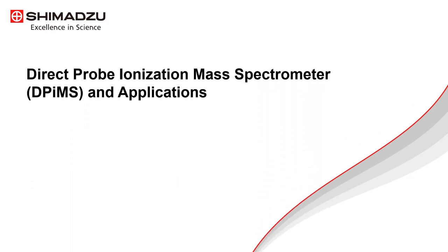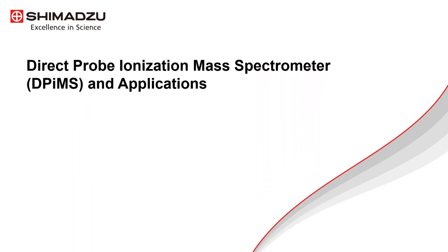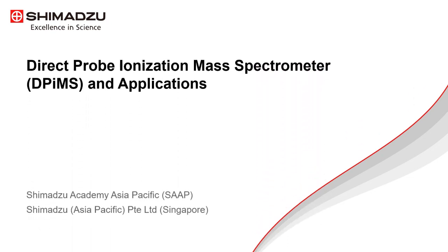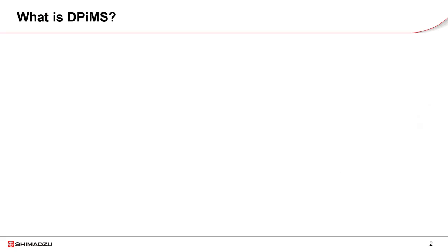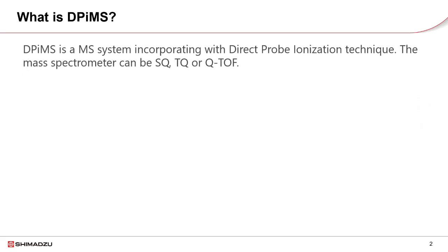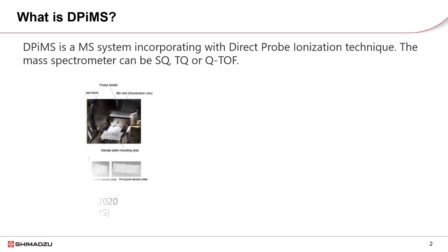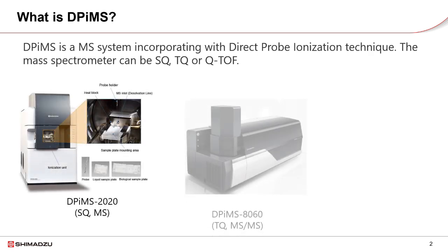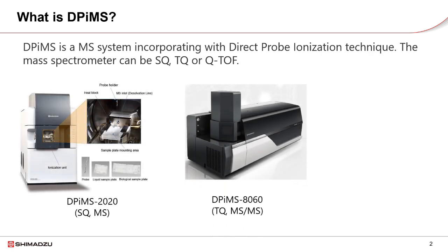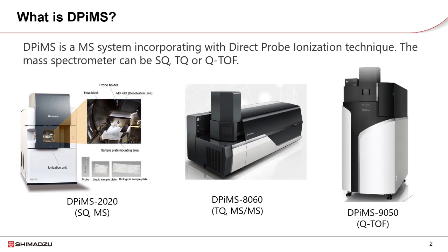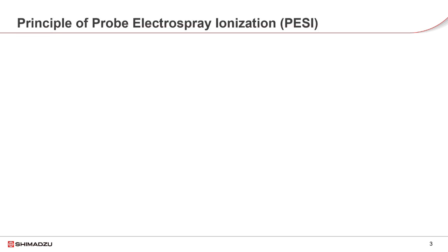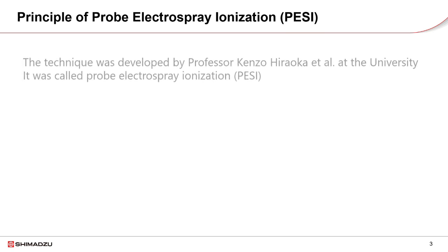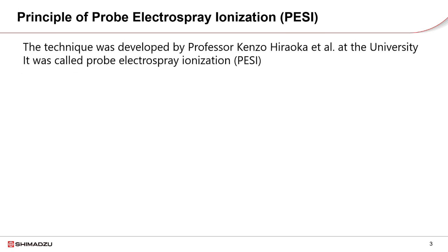In this video, I'd like to introduce a new ionization technique: Direct Probe Ionization for mass spectrometry. DPI-MS is a mass spectrometry system incorporating the direct probe ionization technique. The mass spectrometer can be a single quadrupole, triple quadrupole, or quadrupole time-of-flight.